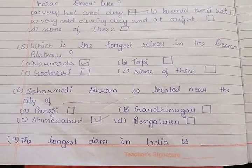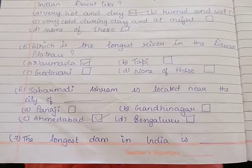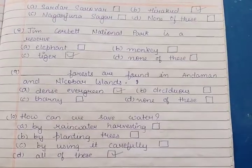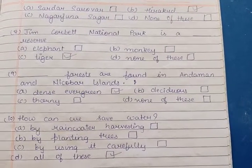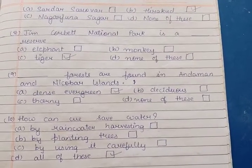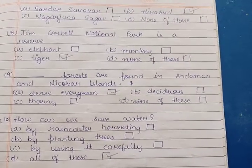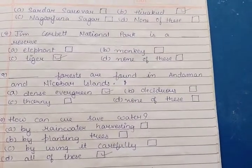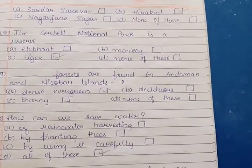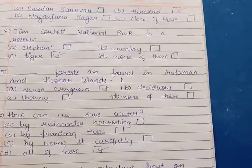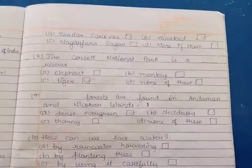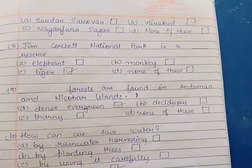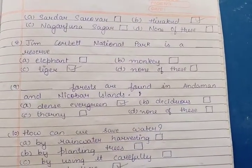Seventh: The longest dam in India is ___. A Sardar Sarovar, B Hirakud, C Nagarjuna Sagar, D None of these. So which is the longest dam? It is Hirakud. India's longest dam is Hirakud.